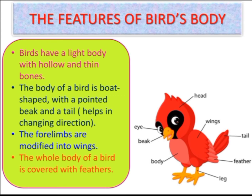Because of their boat-shaped body, birds can fly easily. Have you ever seen an aeroplane? The aeroplane is also boat-shaped! The four limbs are modified into wings — animals have four legs, but birds have two legs and two that are converted into wings. The whole body of a bird is covered with feathers, which are very light. So these are some reasons why a bird can fly.